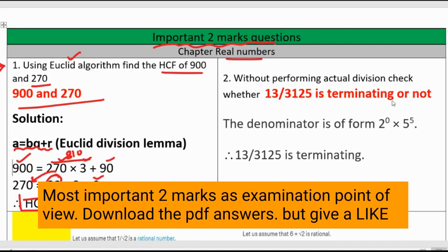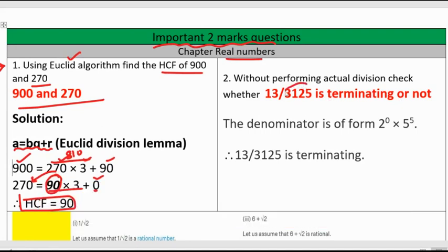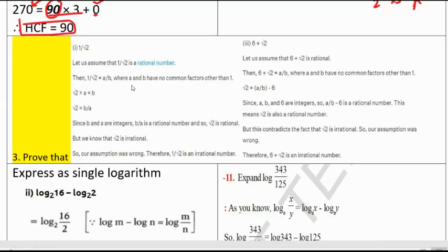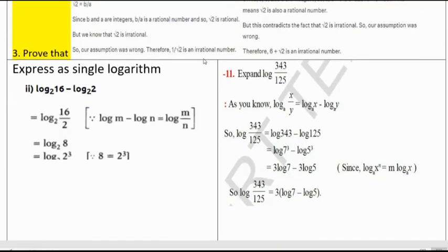Check whether 13 by 3125 is terminating or not. Terminating decimal is not a problem. First, denominator is in the form of 5 power of 5, 2 power of 0, 5 power of 5. This is the form of terminating. Next important question in real numbers is prove that 1 by root 2 or 6 plus root 2 is an irrational number.